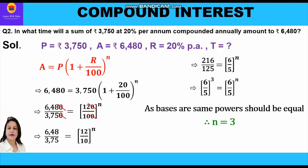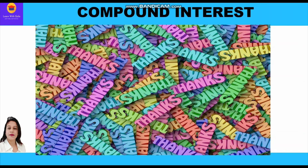The time period is 3 years, when the sum of rupees 3750 will become rupees 6480 at 20% rate of interest. So this is our answer. Hope you enjoyed learning these questions. Please do like and subscribe to my channel. Thank you everyone, have a good day.